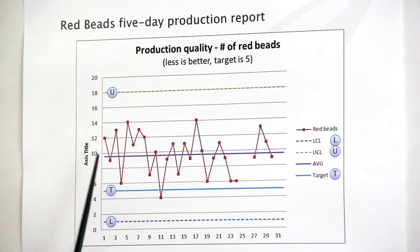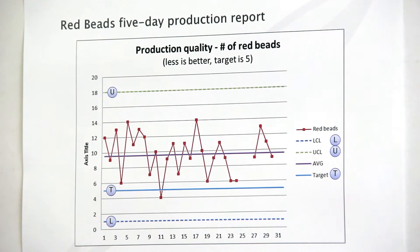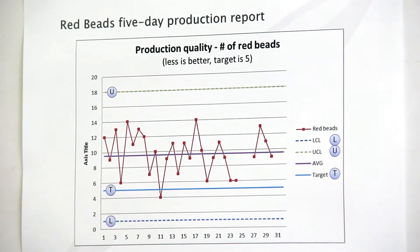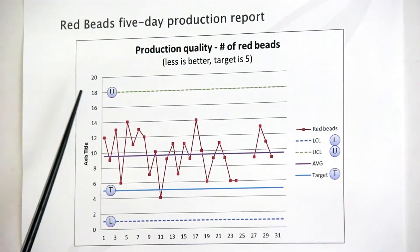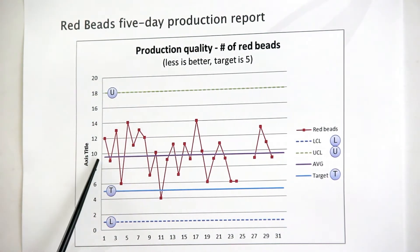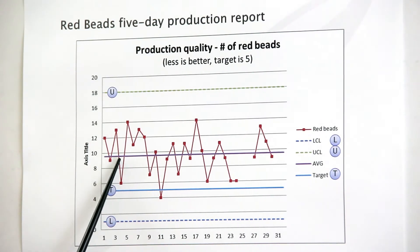And so what we have here is all of the various number of Red Beats that everyone obtained. Now, we have used these numbers to calculate three values: the average, the upper control limit, and the lower control limit, which are listed here as U for upper control limit, the average here, a purple line at the center near 10, and then the lower control limit here at the bottom.